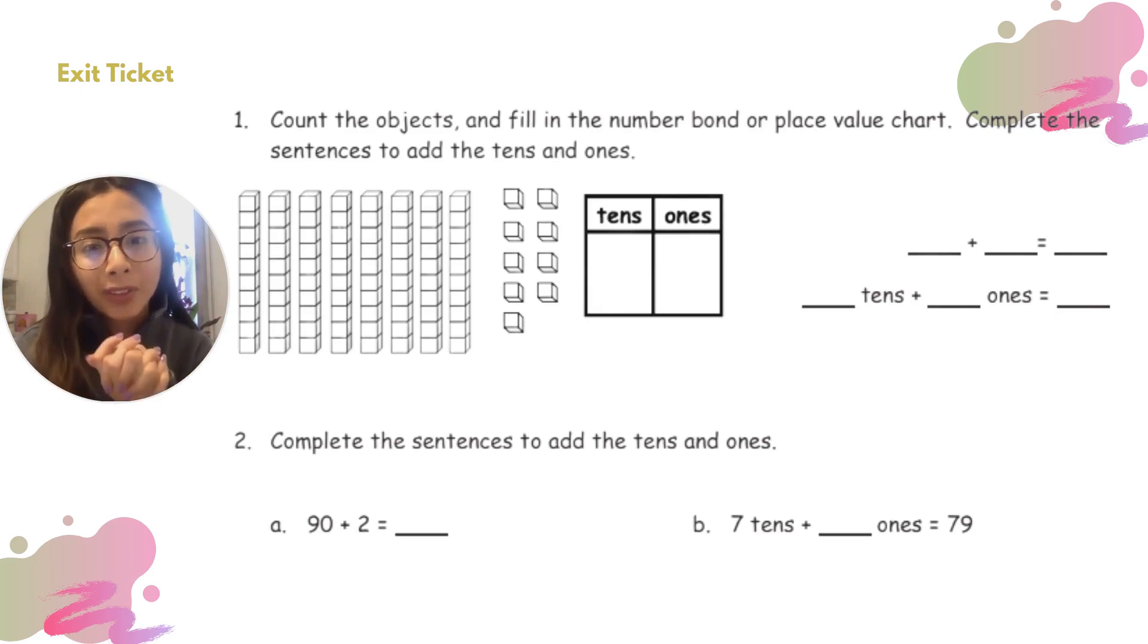And for number two, complete the sentences to add the tens and ones. So letter a is asking you, what's 90 plus 2? What do you get when you put those two numbers together? And letter b, it says 7 tens plus blank ones equals 79. So look at 79 and figure out how many ones are in 79. See you tomorrow, Kipsters!